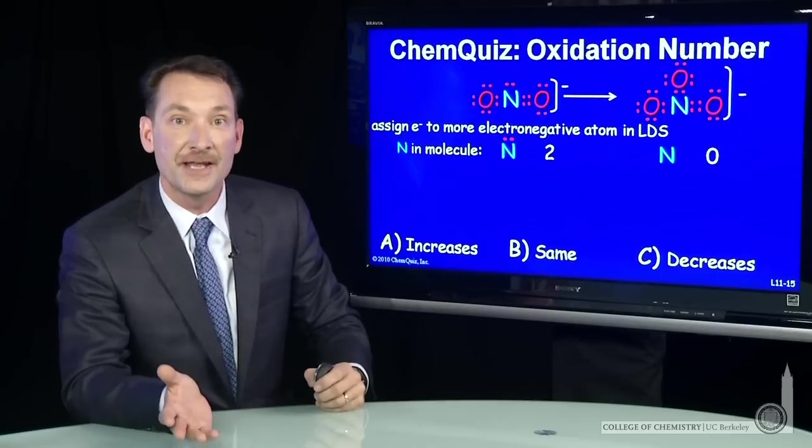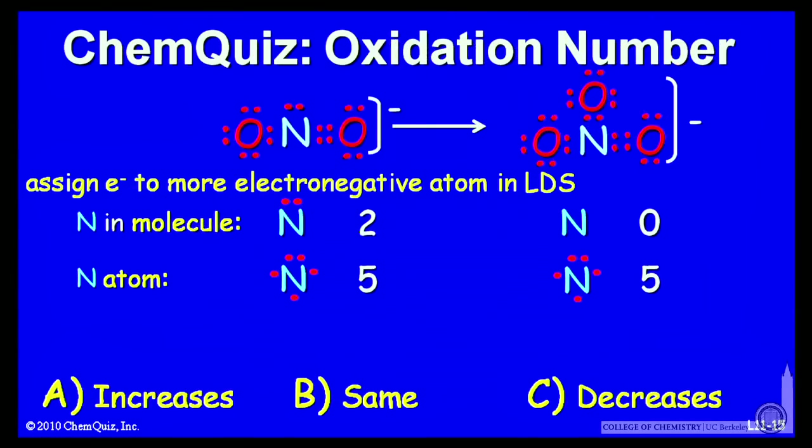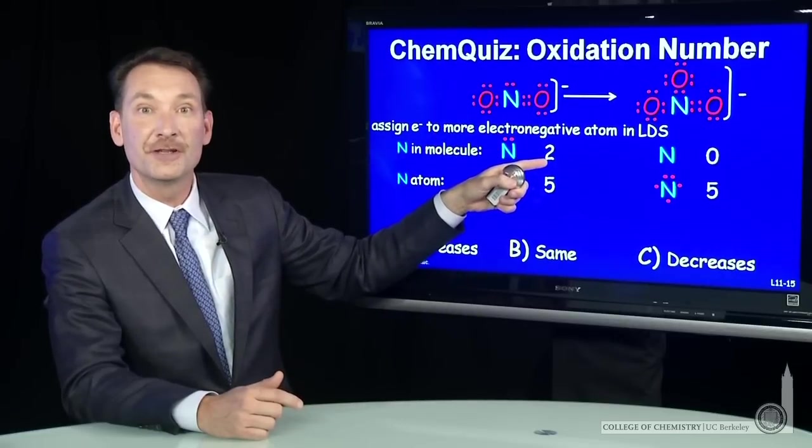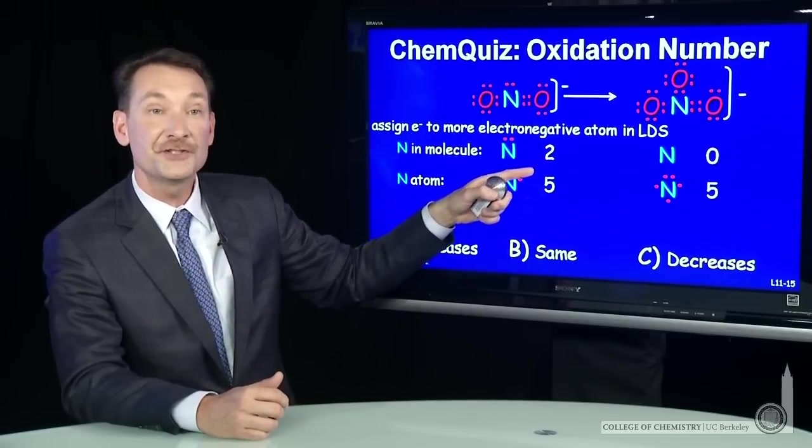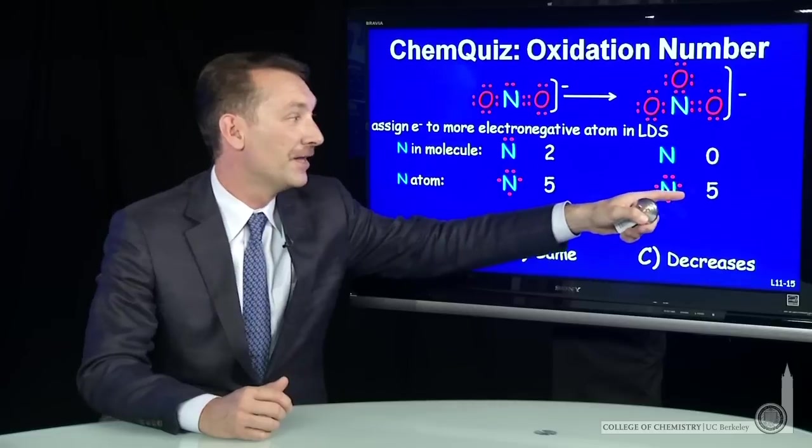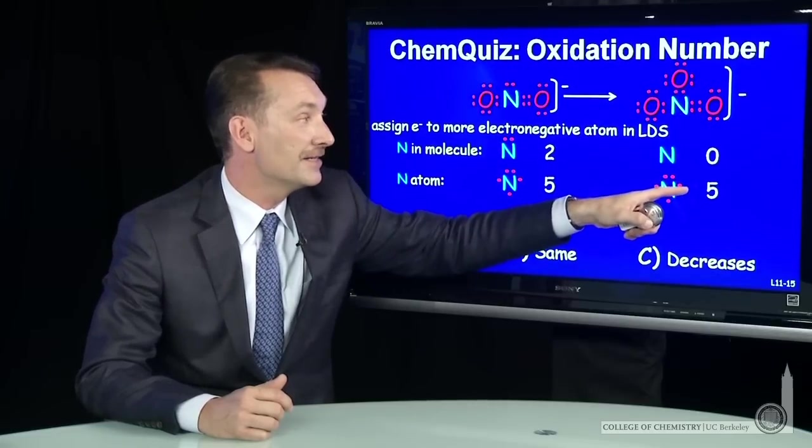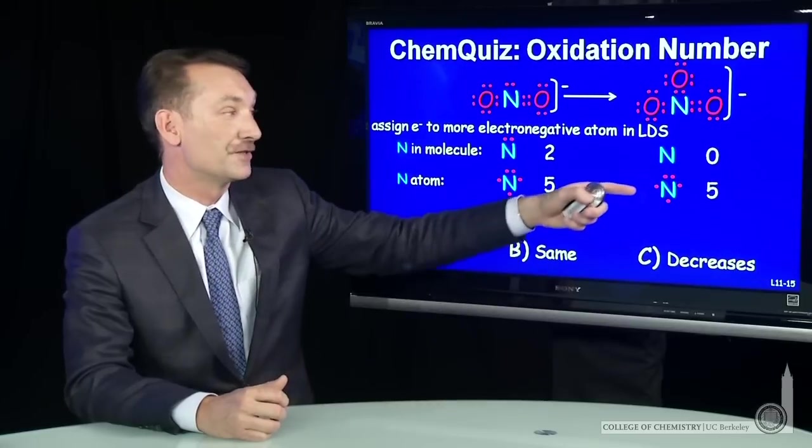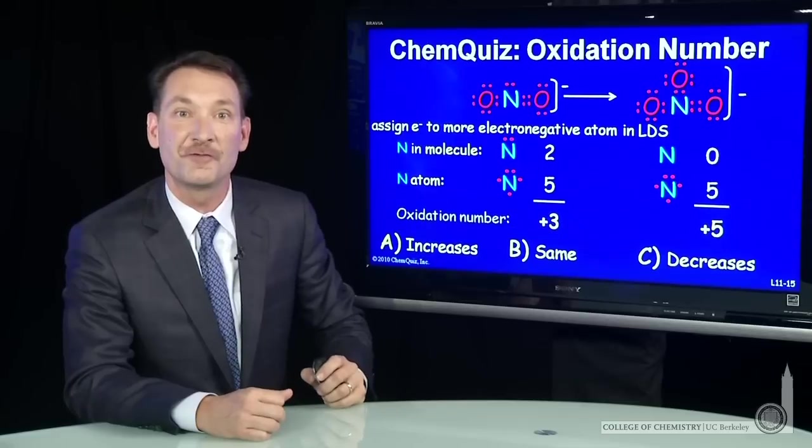We can compare that to how nitrogen behaves as an atom. As an atom, it has five valence electrons. So in NO2-, it has three fewer than it normally would for a plus three oxidation number. In this case, NO3-, nitrogen has five fewer electrons than it would as a neutral atom, so an oxidation number of plus five.